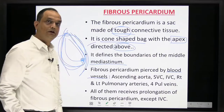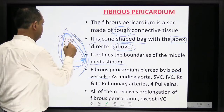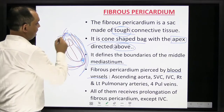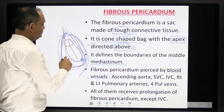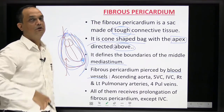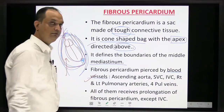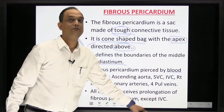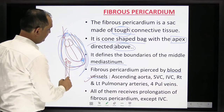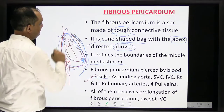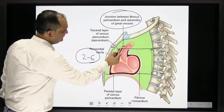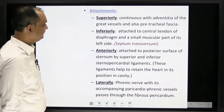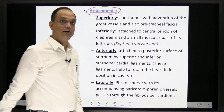The fibrous pericardium is pierced by blood vessels — structures entering or exiting the heart must puncture this fibrous layer. For example, the superior vena cava, inferior vena cava, ascending aorta, pulmonary trunk, and pulmonary veins all puncture the pericardium at some point. All of them receive a prolongation of the fibrous pericardium, except the inferior vena cava.